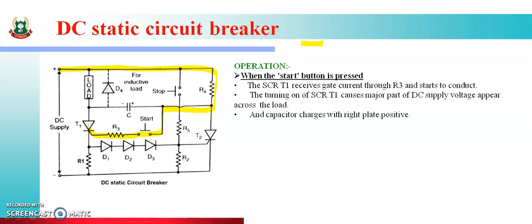The turning on of SCR T1 causes the major part of DC supply voltage to appear across the load। अगर T1 on हो गया तो DC voltage का major part load के across आ जाएगा, circuit complete हो जाएगा। As well as the capacitor charges with the right plate positive — capacitor में से भी current flow होगा और capacitor charge हो जाएगा।